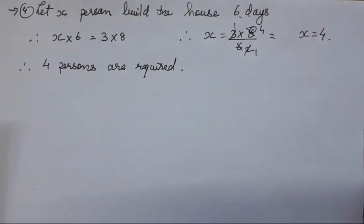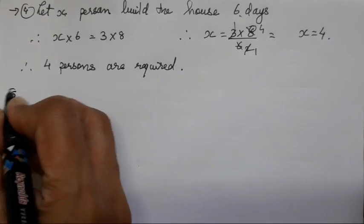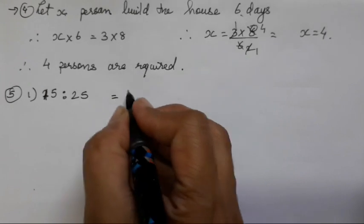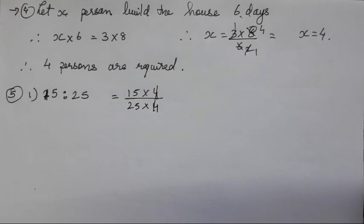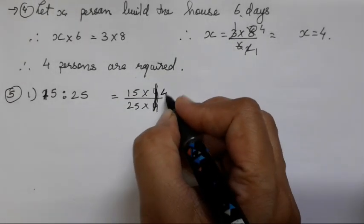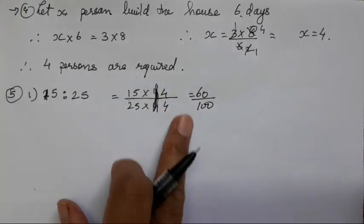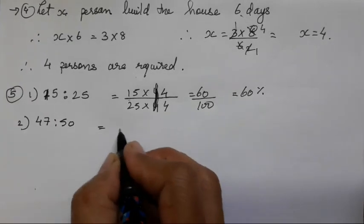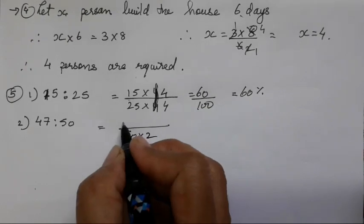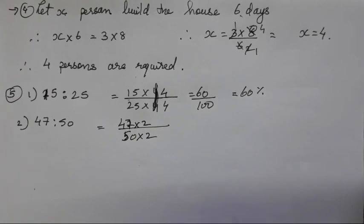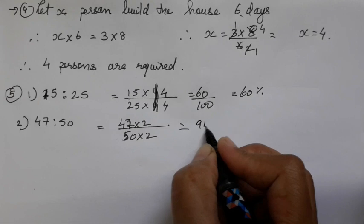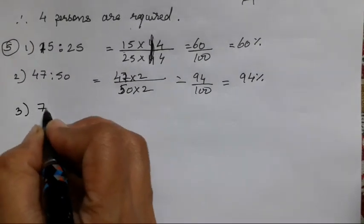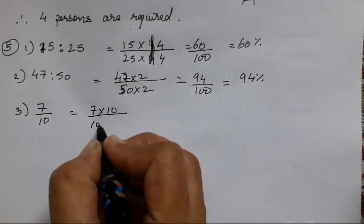The fifth question is: convert the following ratios into percentages. For 15 as to 25: multiply both by 4 to get 60 upon 100, so 60%. For 47 as to 50: multiply both by 2 to get 94 upon 100, so 94%. For 7 upon 10: multiply both by 10 to get 70 upon 100, so 70%.